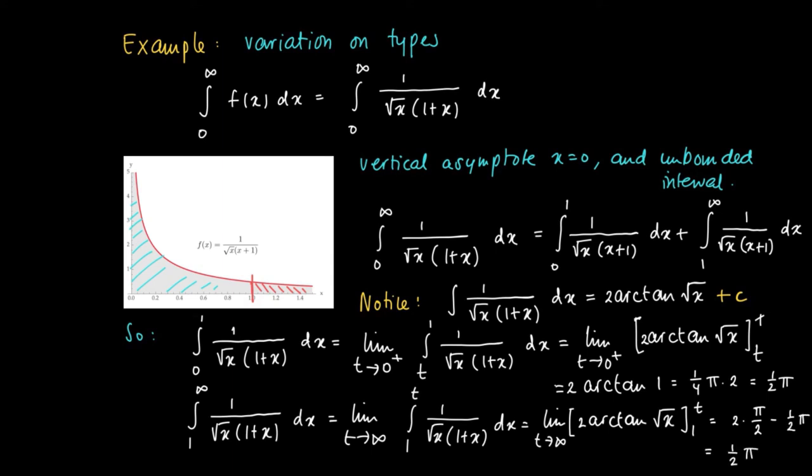Now we see that the two separate integrals exist, and we can add them. The integral from 0 to infinity of f(x) dx equals π/2 plus π/2, which equals π.